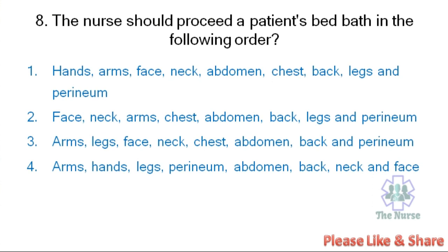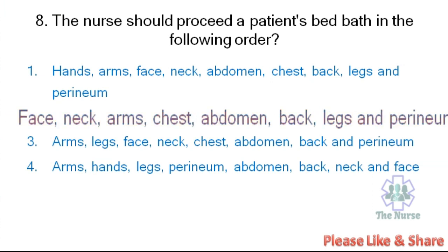Next question. The nurse should proceed a patient's bed bath in the following order. Options include sequences starting with: Hands, Arms, Face; or Face, Neck, Arms, Chest, Abdomen, Back, Legs and Perineum; or Arms, Legs, Face; or Arms, Hands, Legs, Perineum. The correct answer is: Face, Neck, Arms, Chest, Abdomen, Back, Legs, and Perineal area. The steps of bed bath start from Face, Neck, Arms, Chest, Abdomen, Back, Legs, and Perineum.